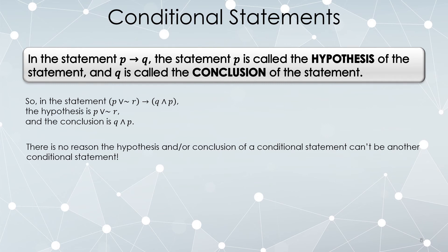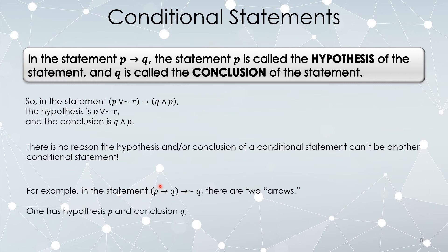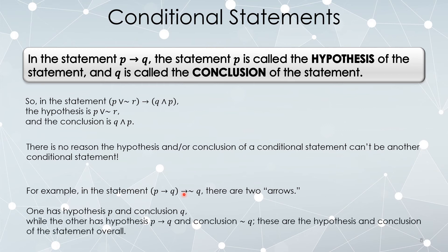The hypothesis or conclusion of a conditional statement could certainly be another conditional statement. In the following example, there are two arrows. The first arrow has hypothesis P and conclusion Q. For the second arrow, its hypothesis is not just Q — it's actually the entire conditional statement P implies Q. The conclusion is not Q. Overall, the fundamental building block is the outer conditional arrow, so the hypothesis overall is P implies Q and the conclusion overall is not Q.